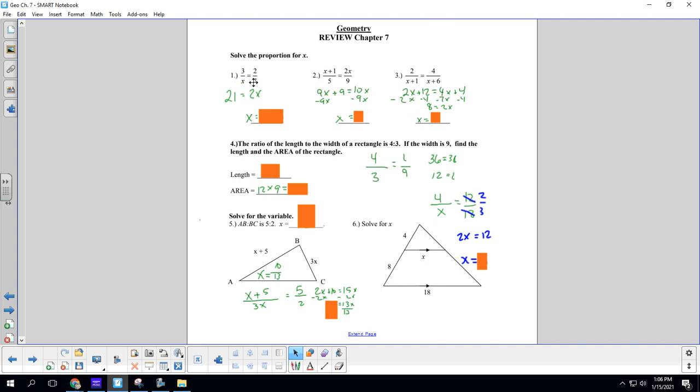So the process for one, two, and three are the same. We are going to cross multiply. So we're going to go three times seven to get 21, and two times x to get 2x. Then we're going to divide both sides by two. And our answer is 10.5.